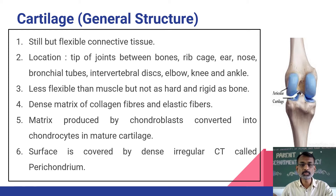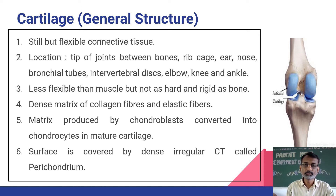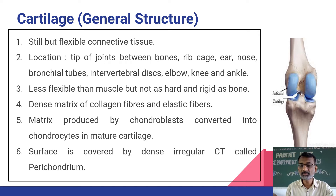Now we will talk about the general structure of cartilage. This diagram shows the sky-blue colored cartilage present at the tip of the long bones. This is the long bone of our leg, and at the apex there is a presence of blue colored cartilage. At the tip of the next bone there is also a cartilage, and these two cartilages help in smooth movement and smooth articulation during the movement of our body organs.